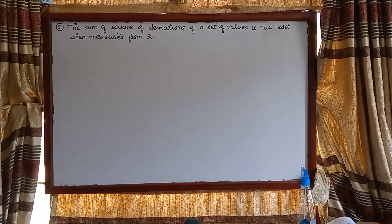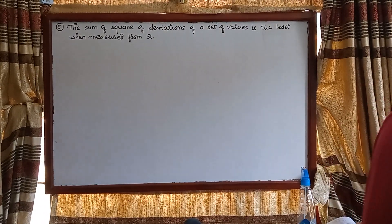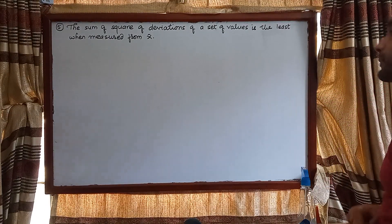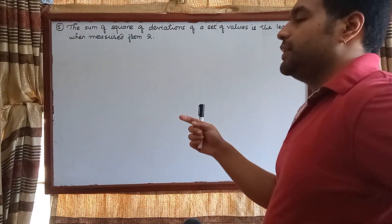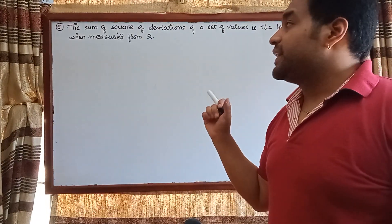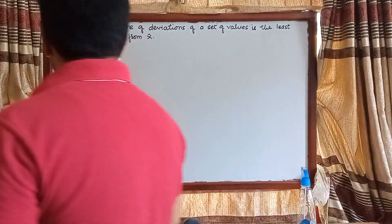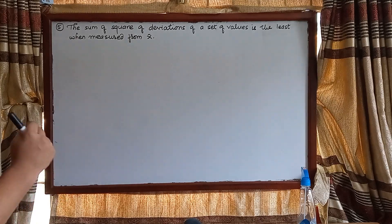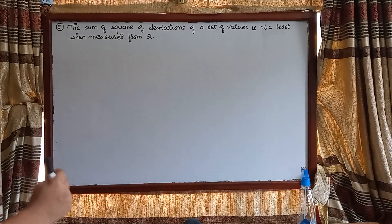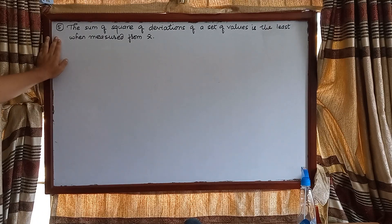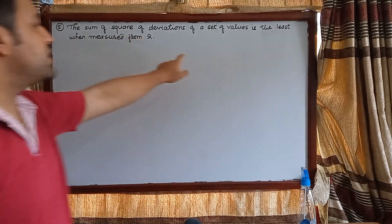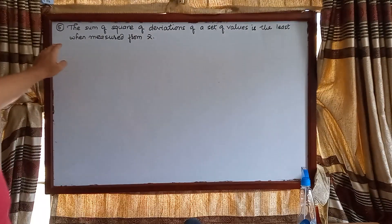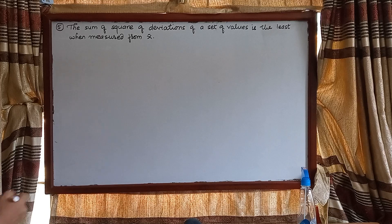Hello everybody, let's continue with the discussion of the mathematical properties of arithmetic mean. This is the last property we're going to discuss, then we will proceed with examples and discuss weighted arithmetic mean as well. This property says that the sum of squared deviations of a set of values is least when measured from x̄.